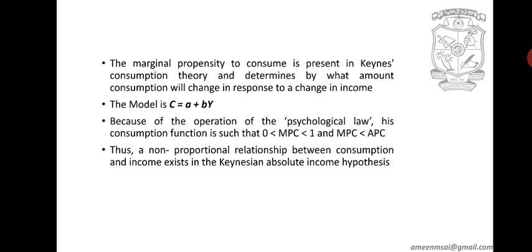In the formula, C denotes consumption. A denotes autonomous consumption. B represents the marginal propensity to consume, and Y is the disposable income. Because of the operation of the psychological law, his consumption function is such that MPC is between zero and one — that is, zero is less than MPC, which is less than one.